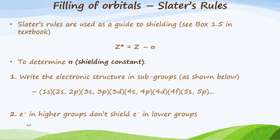First of all you write the electron structure or electron configuration in subgroups as shown below. You'll see that we group: there's the 1s, this is now the set n=2, this is now n=3, now 4 and 5. Electrons in higher groups will not shield electrons in the lower groups.